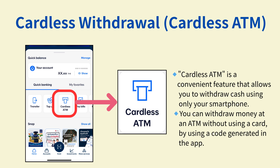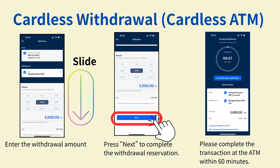Cardless ATMs are a convenient feature that allows you to withdraw cash using only your smartphone. Recently, there have been many incidents where cards are swallowed by ATMs. To avoid such problems, it is recommended to use a cardless ATM, where you can generate a code in the app and withdraw cash without using a card. First, enter the amount you want to withdraw. After selecting the amount, press Next to complete the withdrawal reservation. Use the issued code at an ATM within 60 minutes.